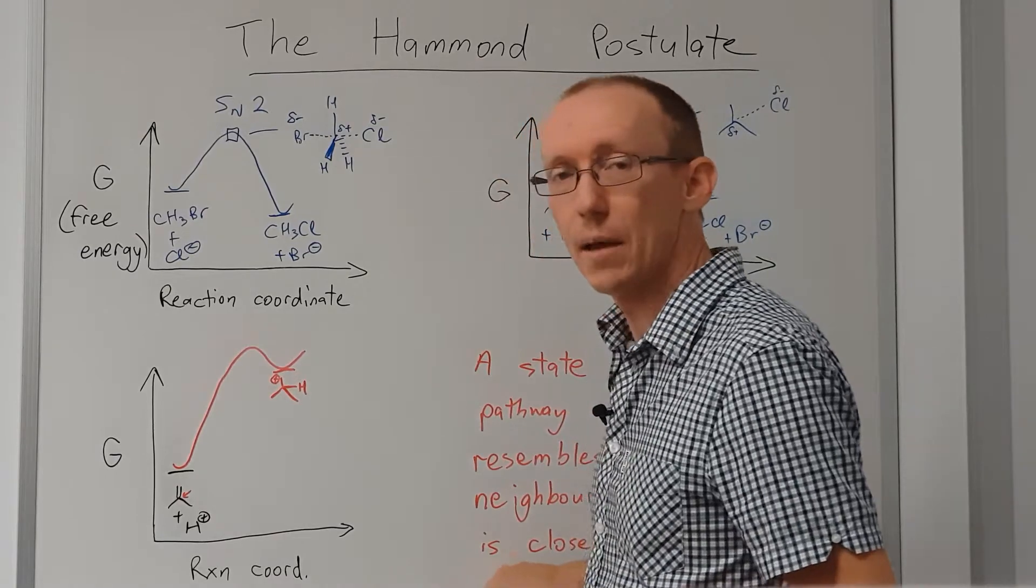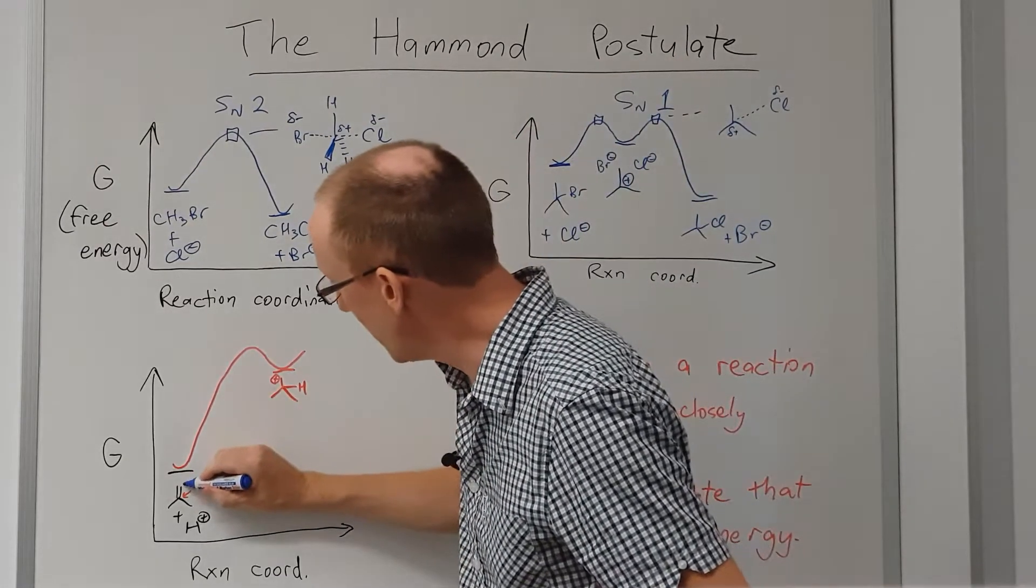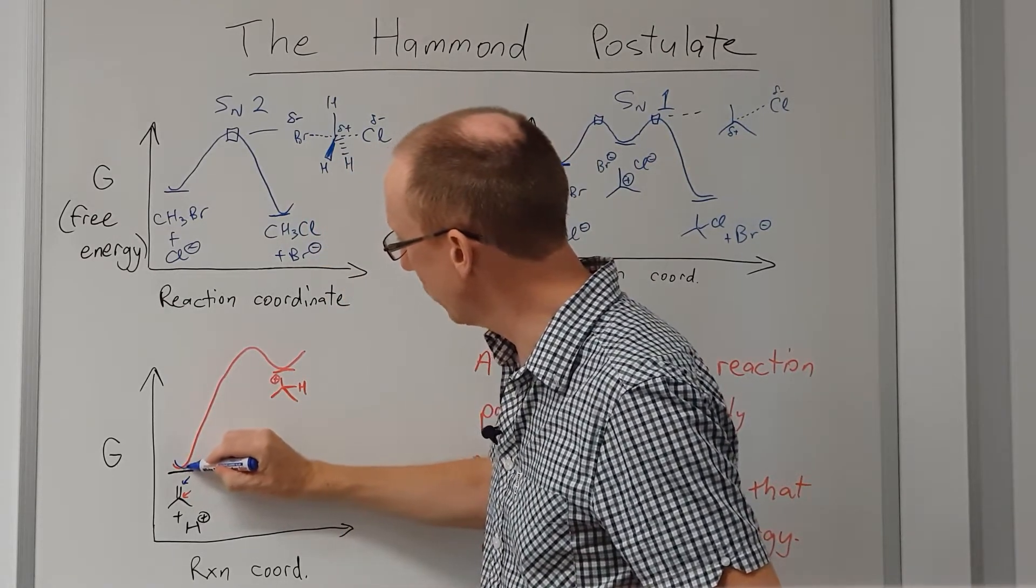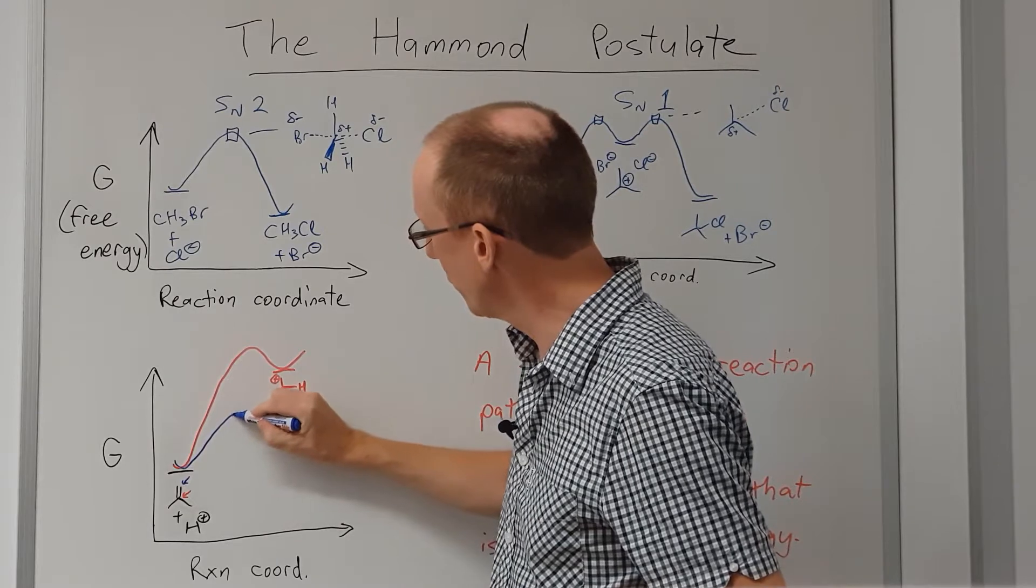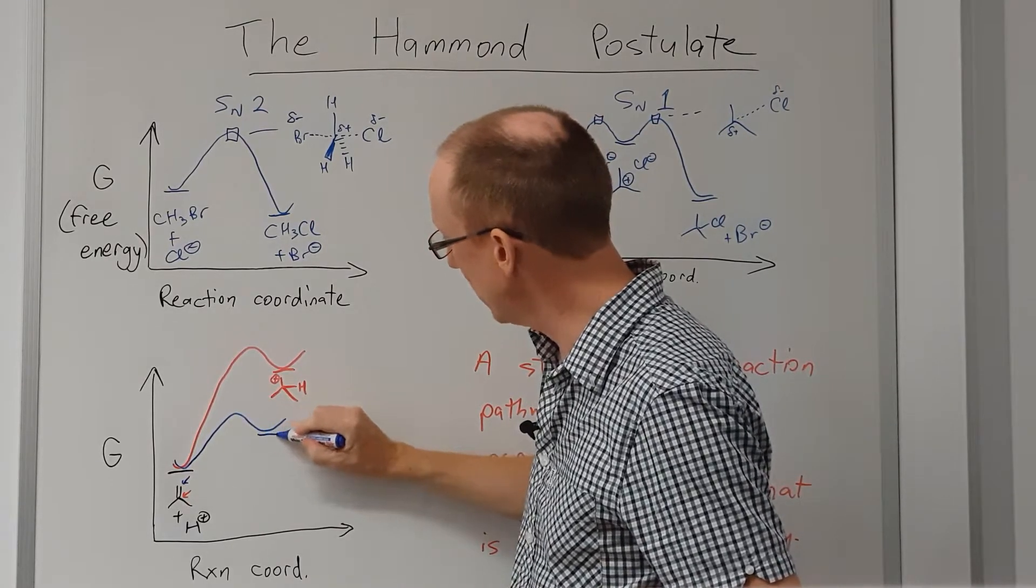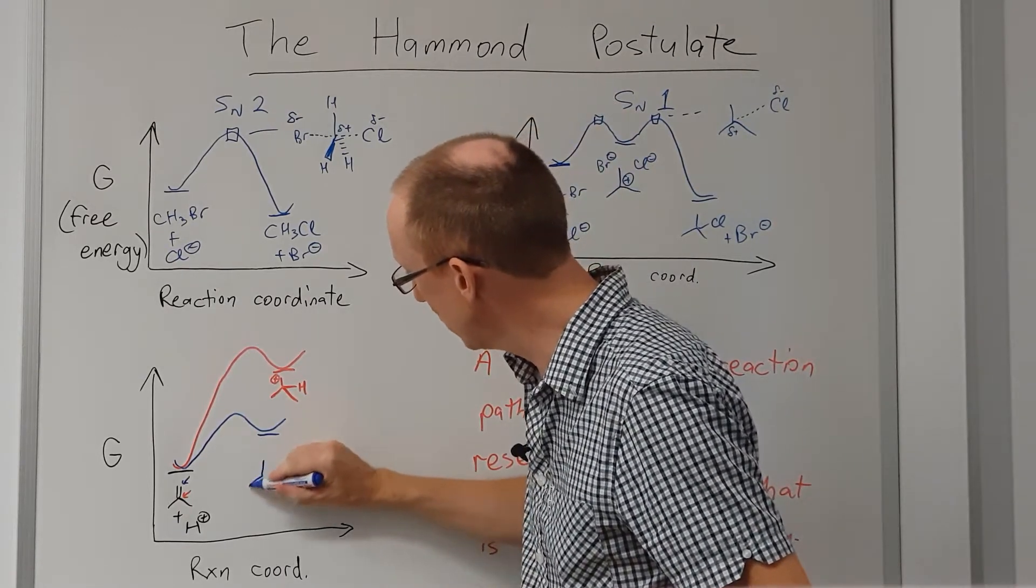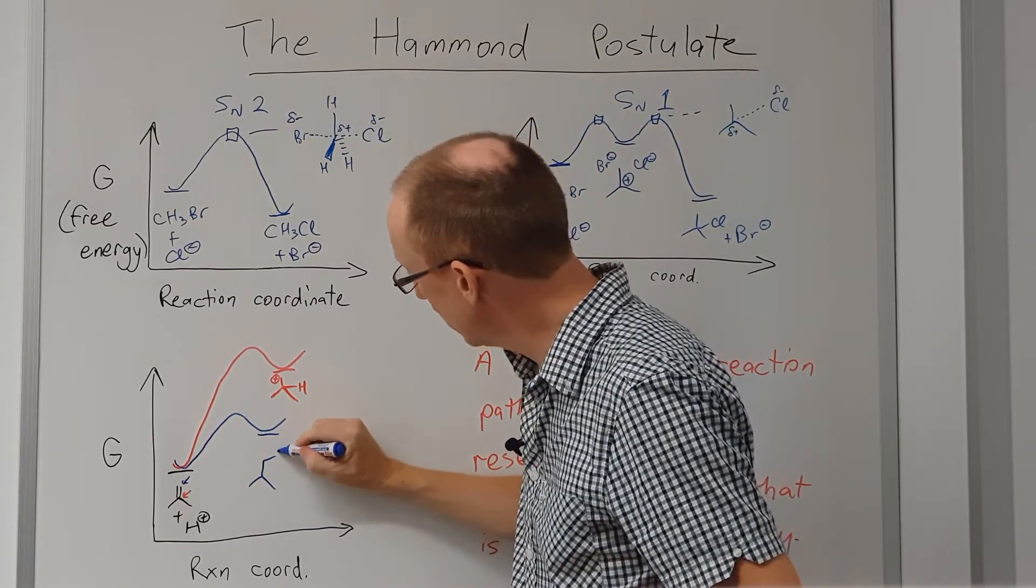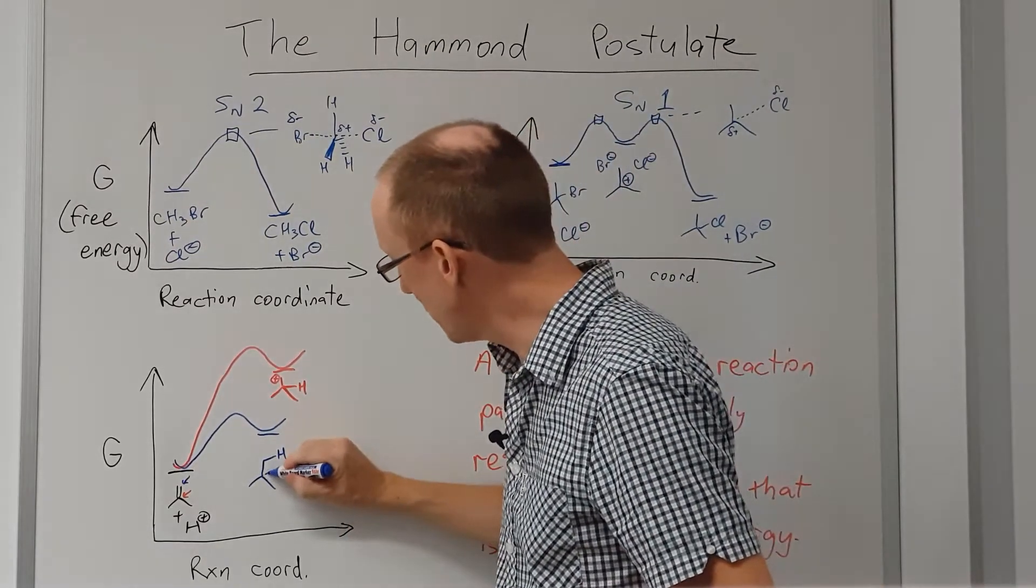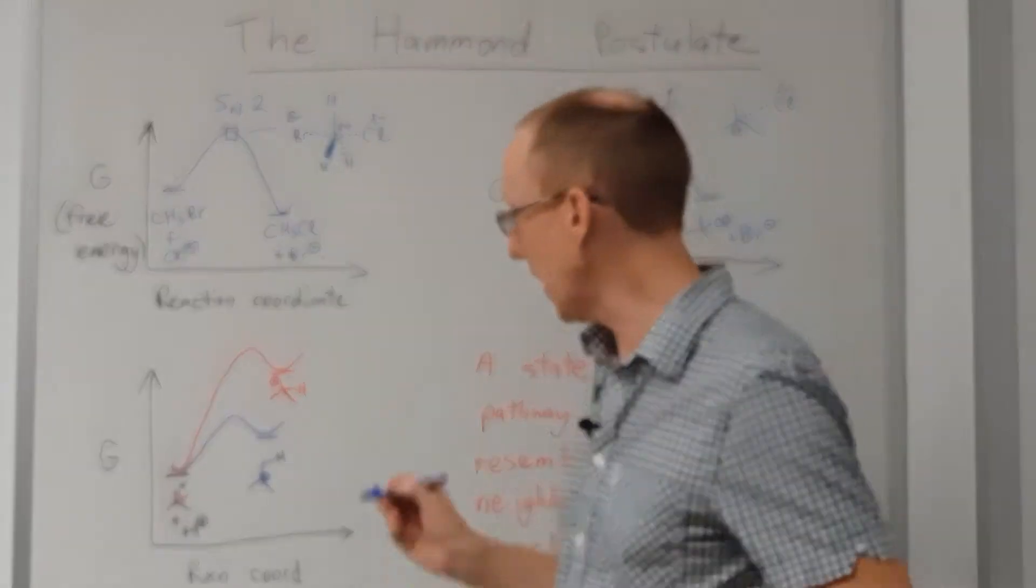Now what about if we look at protonation of the other end of the double bond? We're going to protonate here. We're going to start in the same place, go up through an energy barrier down to an intermediate like that, and that intermediate is going to have a different structure. It's going to have the added proton at the terminus and the positive charge is going to be on that central carbon. So it's the tertiary carbocation.